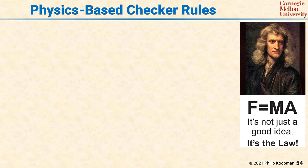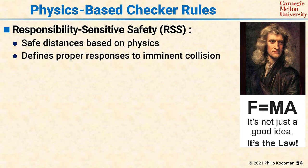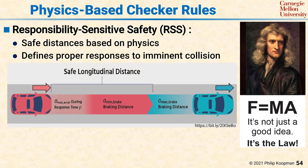The Responsibility Sensitive Safety (RSS) approach uses physics-based analysis to determine what safe following distances are and other geometric considerations to analyze what maneuvers are safe, what maneuvers are not safe, and what a proper response should be in various geometric situations. While a variety of different geometric situations are considered, the simplest one is a leader-follower scenario. A following car wants to leave enough distance so that it cannot possibly crash into a leading car. It does this by considering how fast the lead car can brake, how fast the following car can brake, and the response time for the following car to begin braking.